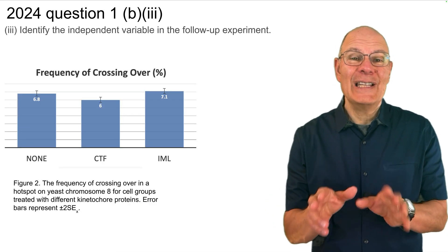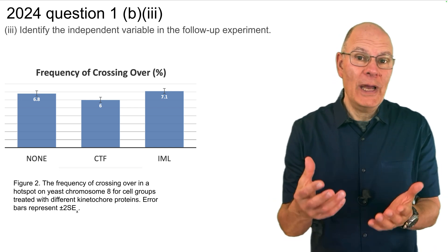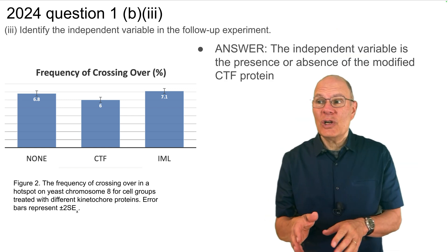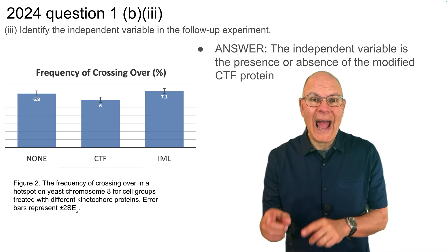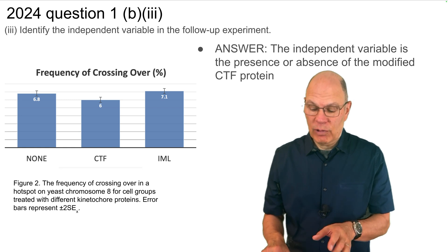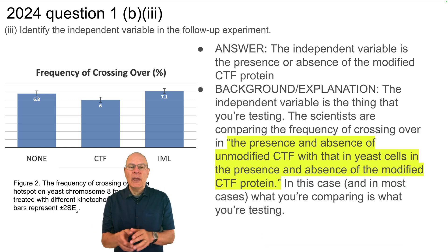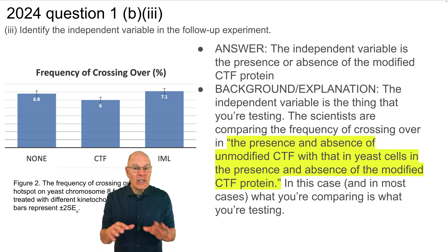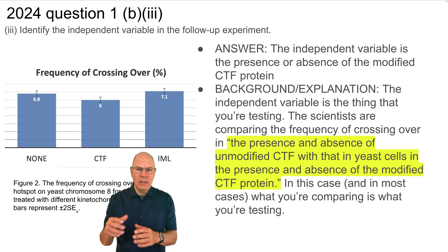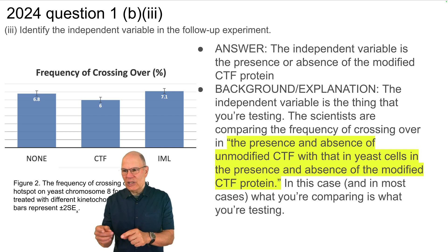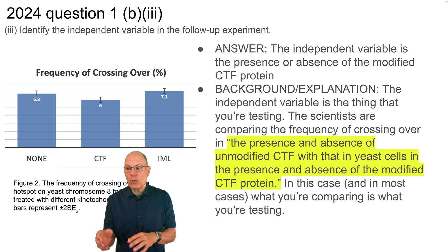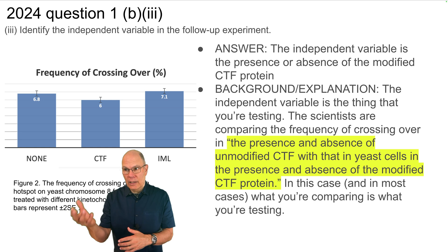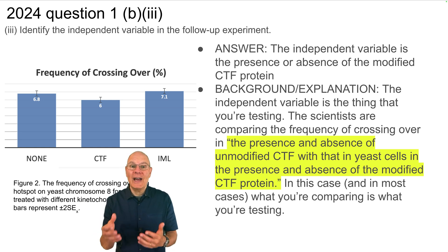Question 1b, part three: identify the independent variable in the follow-up experiment. The answer is the independent variable is the presence or absence of the modified CTF protein. The independent variable is the thing you're testing. The scientists are comparing crossing over frequency in the presence and absence of unmodified CTF with that in cells in the presence and absence of modified CTF — what you're comparing is what you're testing.